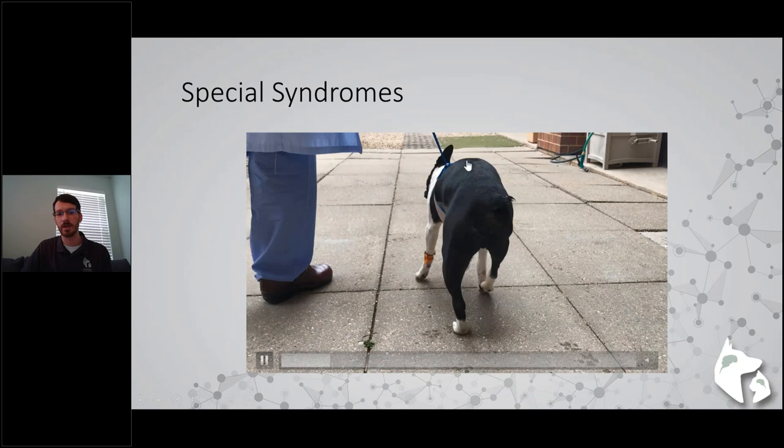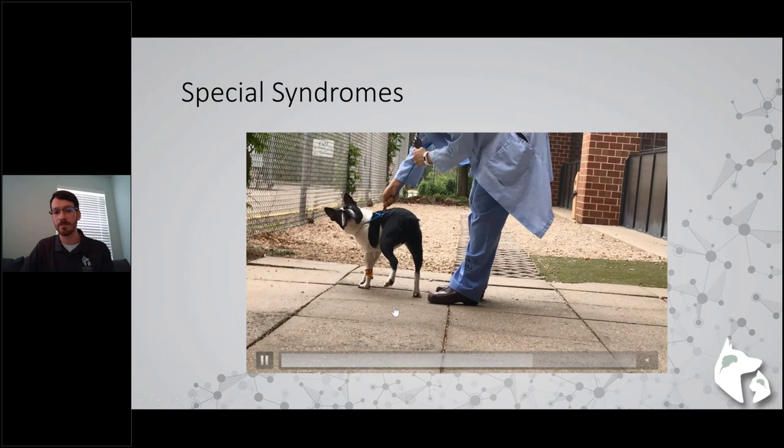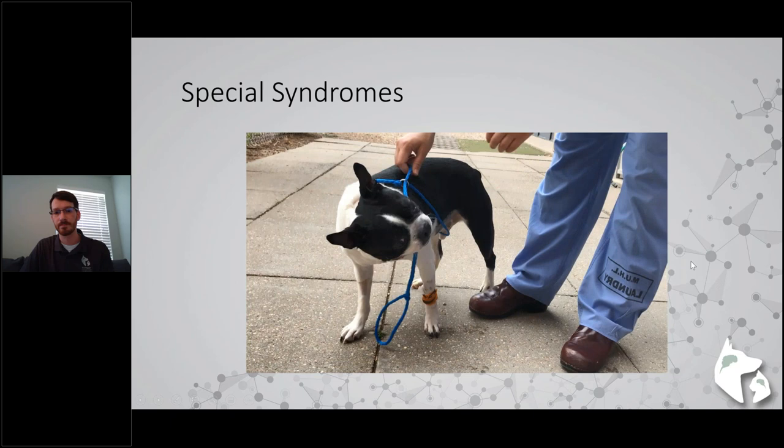Here is a great example of paradoxical vestibular disease: a Boston Terrier with a head tilt to the right, but with very over-exaggerated, hypermetric movement on the left side of the body. This patient did have paw placement deficits on the left side - a great example of a paradoxical vestibular patient.